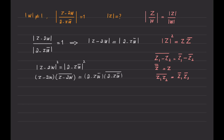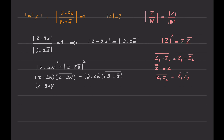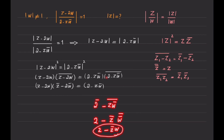Using these ideas, I can expand the conjugates. On the left, the conjugate of z minus 2w becomes z bar minus 2w bar, noting that the conjugate of 2 is just 2 since it is real. So the left-hand side is z minus 2w multiplied by z bar minus 2w bar. On the right-hand side, the conjugate of 2 minus zw bar becomes 2 bar minus z bar times w bar bar, which simplifies to 2 minus z bar w.